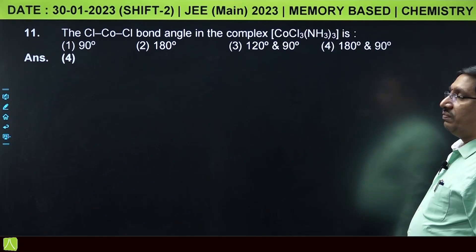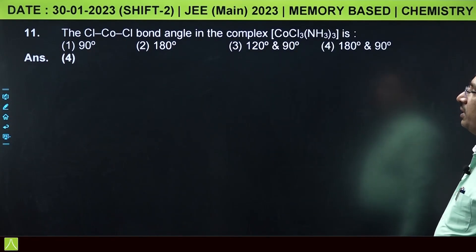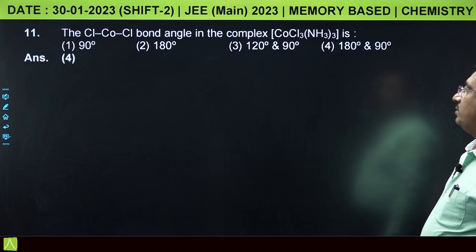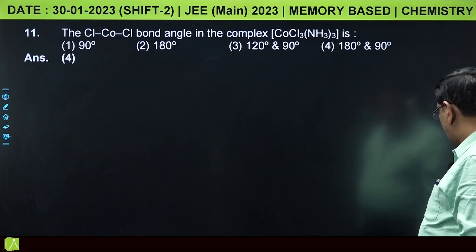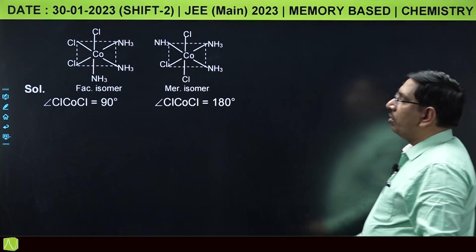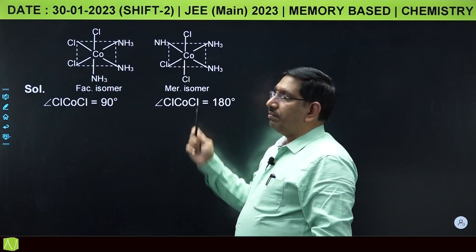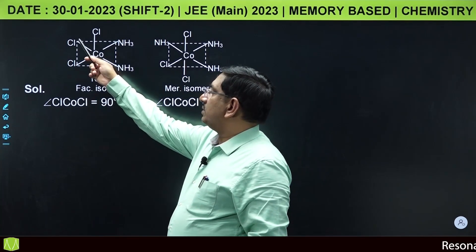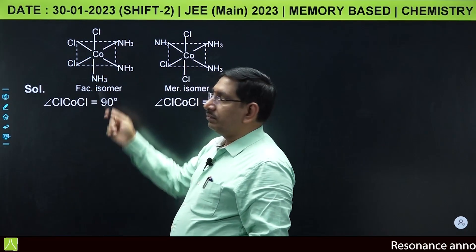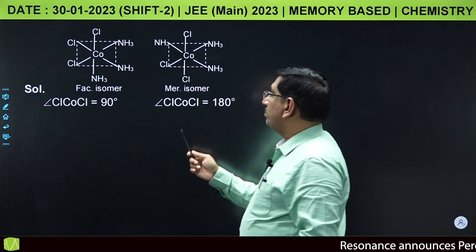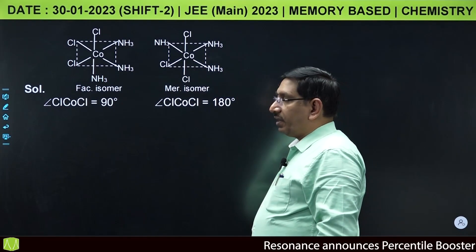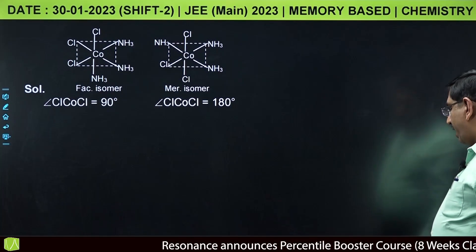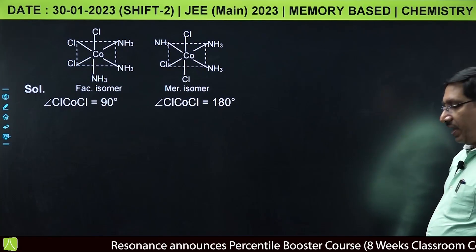This is from coordination compounds. The Cl-Co-Cl bond angle in the complex CoCl3(NH3)3. This complex can exist in two isomers: fac isomer and mer isomer. In the fac isomer, the angle is 90 degrees, and in the mer isomer, it is 180 degrees. So there is a possibility of two angles: 90 degrees and 180 degrees.